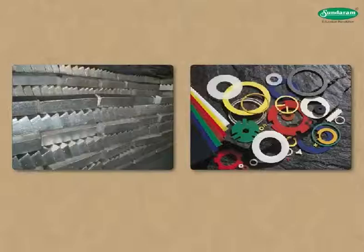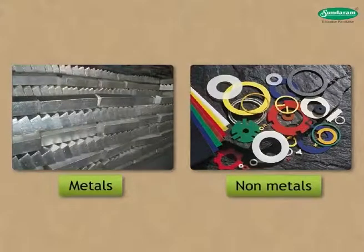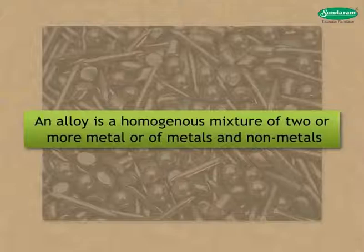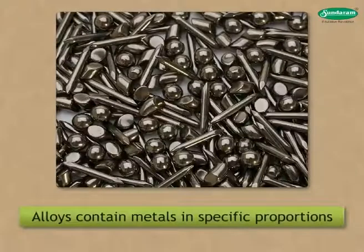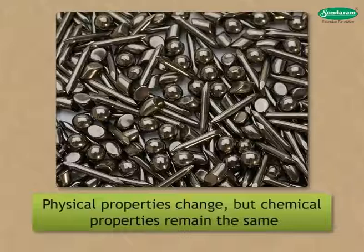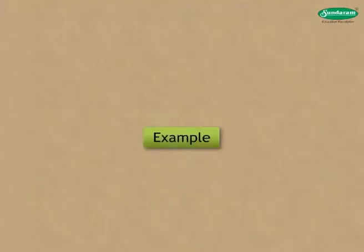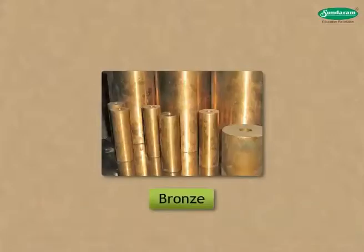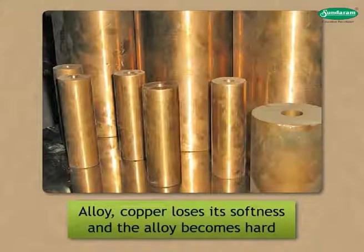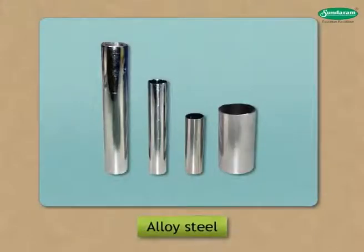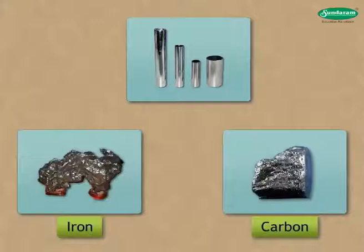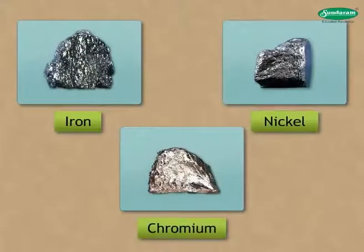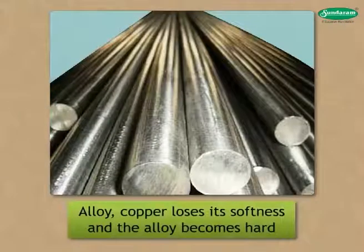By now we have studied about metals and non-metals. An alloy is a homogeneous mixture of two or more metals, or of metals and non-metals, in specific proportions. In an alloy, physical properties change but chemical properties remain the same. When copper and tin are mixed in proper proportion, we get an alloy called bronze — copper loses its softness and the alloy becomes hard. The alloy steel is obtained from iron and carbon and is a stronger material. Iron, nickel and chromium form an alloy called stainless steel, which is more durable, clean and does not rust.